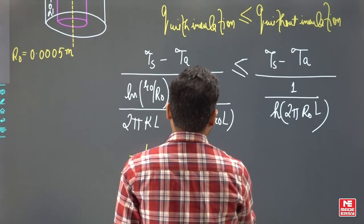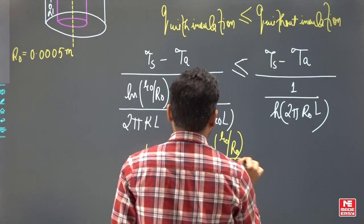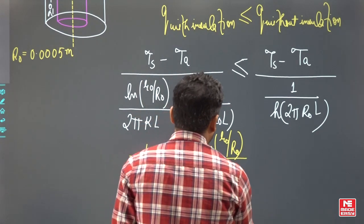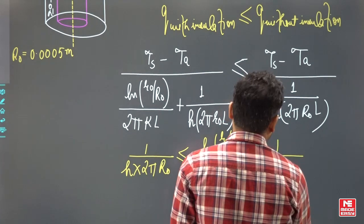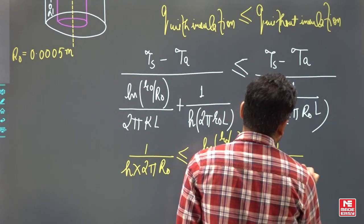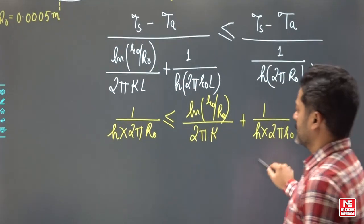Take it to this side. ln small r_O by capital R_O by 2πKL, L is cancelled actually, plus 1 by H into 2π small r_O, something like this.